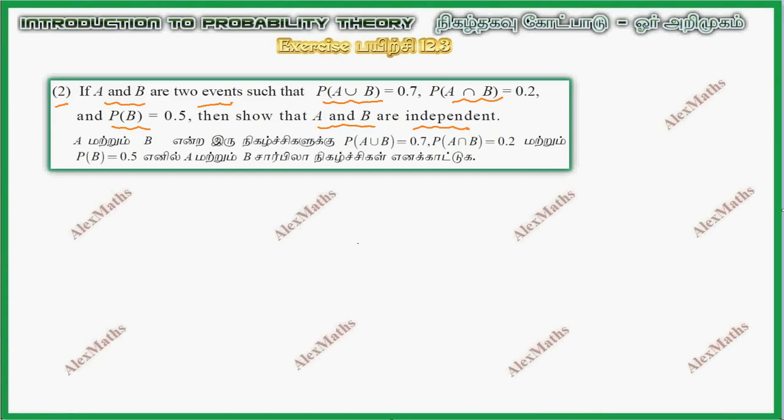So it is going to be P(A). This is the addition formula: P(A union B) equals P(A) plus P(B) minus P(A intersection B).